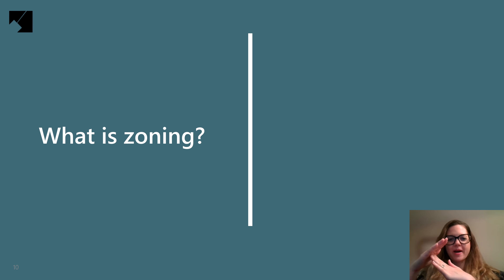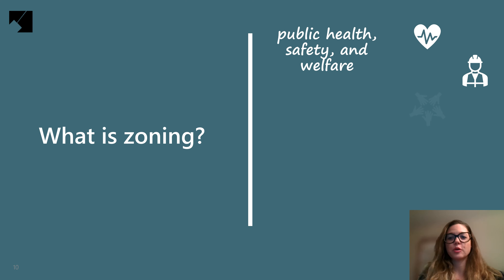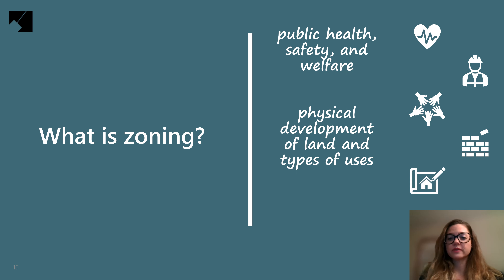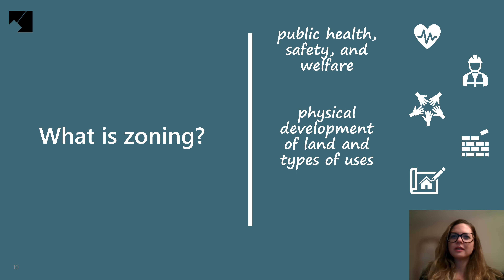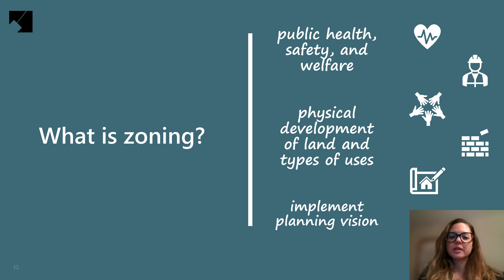What is zoning? Zoning is the legal power of government to regulate the use of private property for the purpose of protecting public health, safety, and welfare. In Prince George's County, this power is delegated to and exercised by the County Council sitting as the District Council. Zoning is how the County controls the physical development of land and the kinds of uses permitted on each individual property. Would you like a liquor store or an adult video or bookstore located immediately next door to your child's elementary school? Zoning helps us deal with situations like that, and ultimately helps implement the planning vision for a community or area. Therefore, the link between planning and zoning is critical.